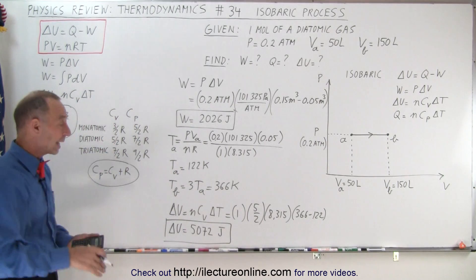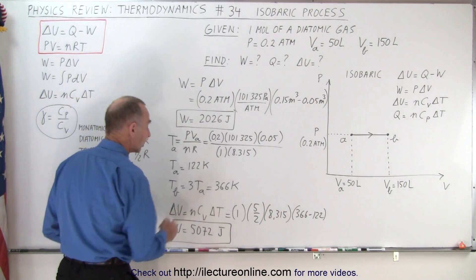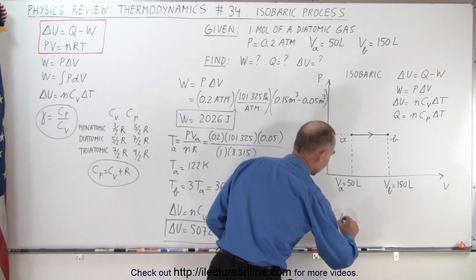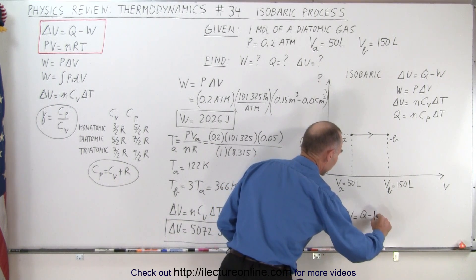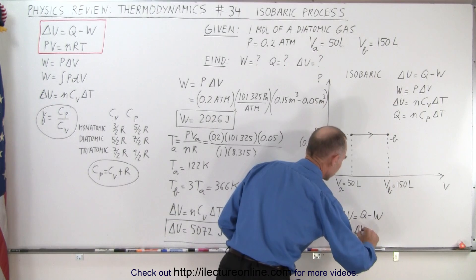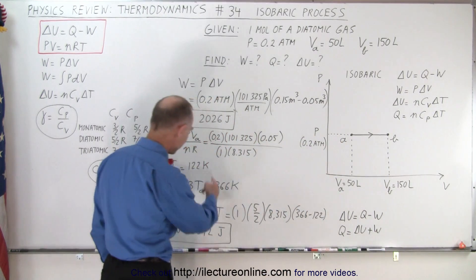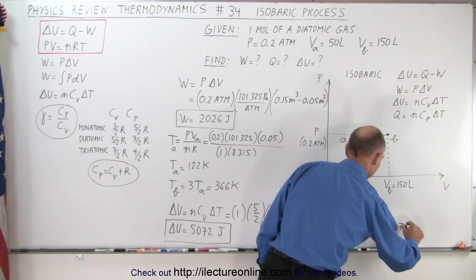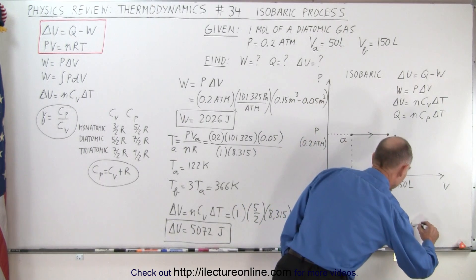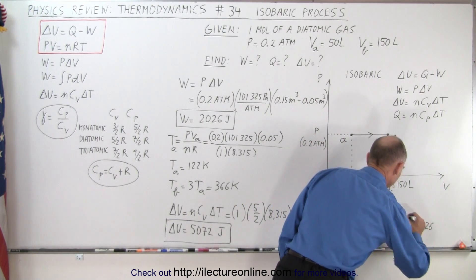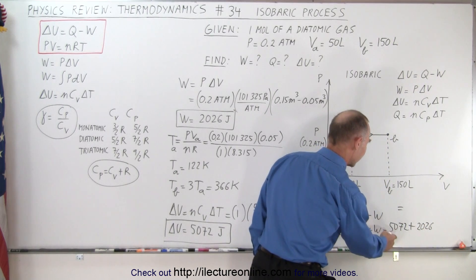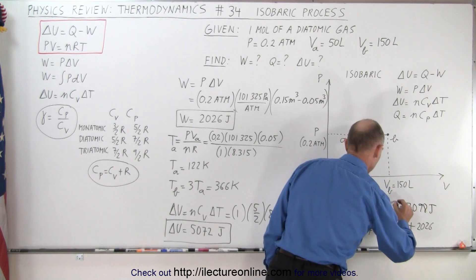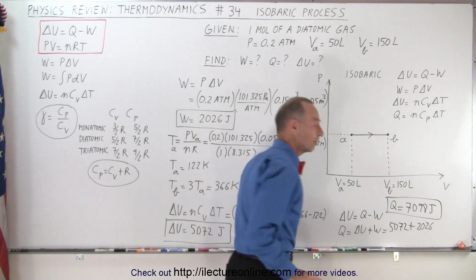Now for Q, heat added to the gas, we can do the same thing. We can say it's n times C_p times delta T. Or we can use the first law of thermodynamics that tells us that delta U is equal to Q minus W, which means Q equals delta U plus W. In other words, we simply have to add these two together. And so that would be 5072 plus 2026, which is 7098. And that would be Q. So there's the final answer.